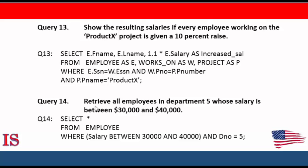Query number 14: Retrieve all the employees in department 5 whose salary is between 30 and 40 thousand dollars. We select all attributes from employee where salary BETWEEN 30,000 AND 40,000, and the department number is equal to 5. Pretty simple.